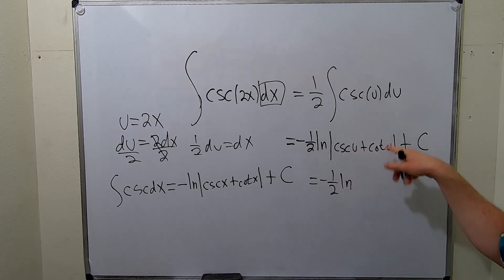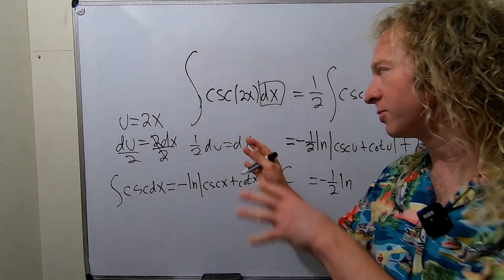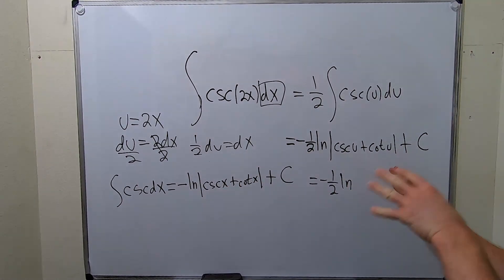Okay, and this is equal to negative 1/2 ln. So now after you do this, after you integrate, you always go back, okay? You always go back and you replace u with what it is, because this is x's, so you want to finish with x's.